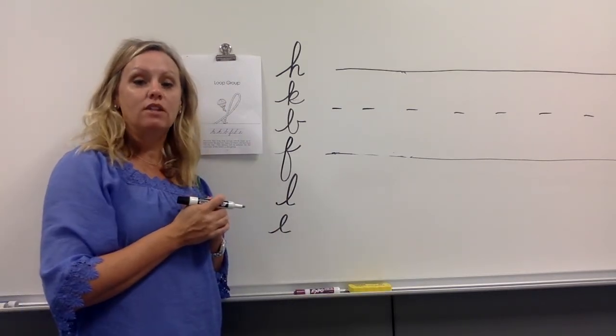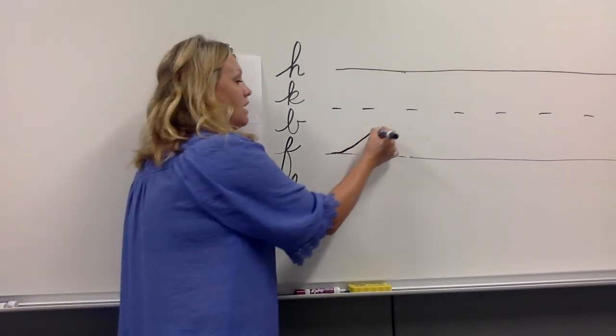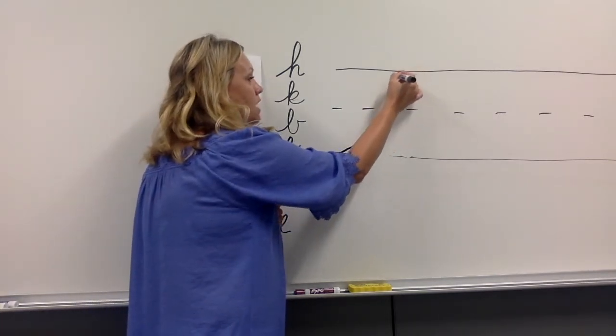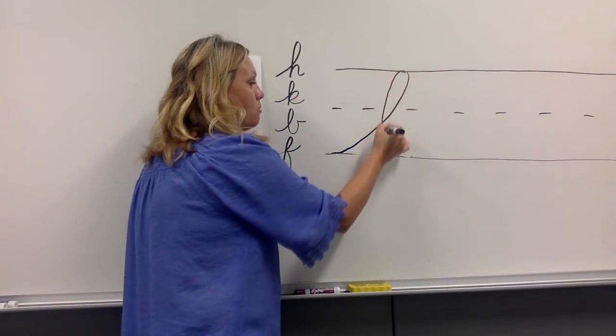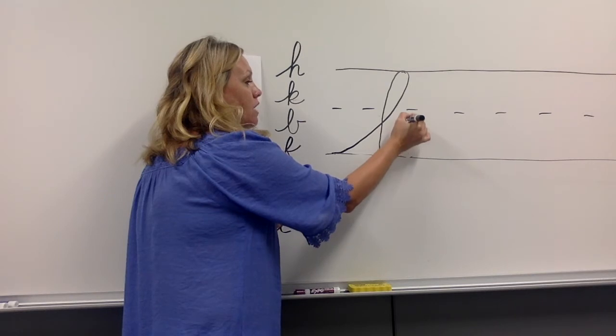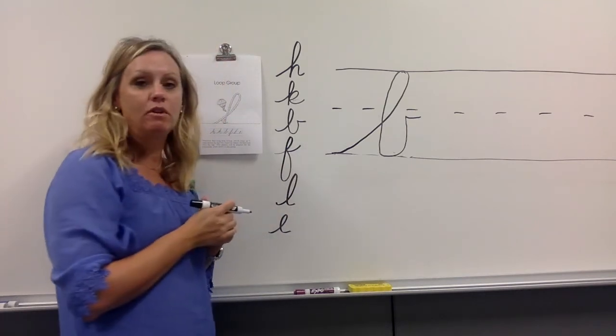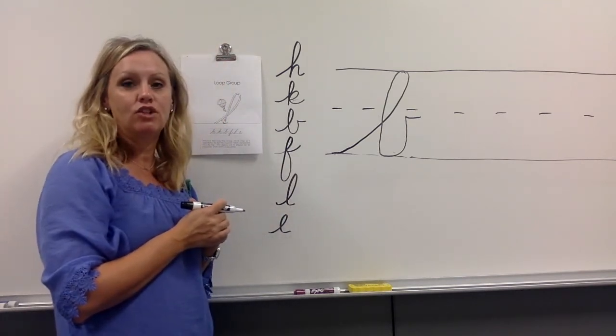Next loop group letter is lowercase B. Start at your bottom writing line. Kite string all the way up to the top, backwards loop, pull down straight, curve up to the middle, and then release at your middle divider line. There's your B.